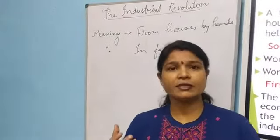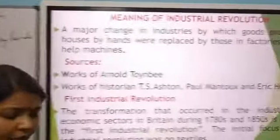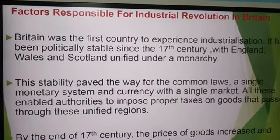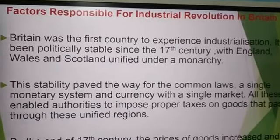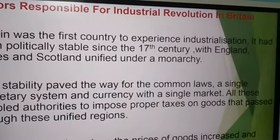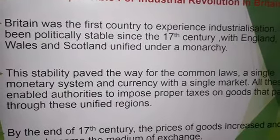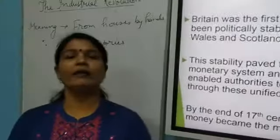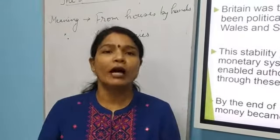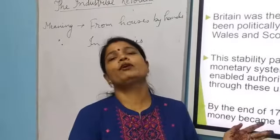Why did it happen in Britain? Britain was unified — Scotland, Wales, and England were unified under one monarchy. So Britain was the first country to experience the Industrial Revolution because these regions were unified under one monarchy. This was the main reason, and it paved the way for the Industrial Revolution.